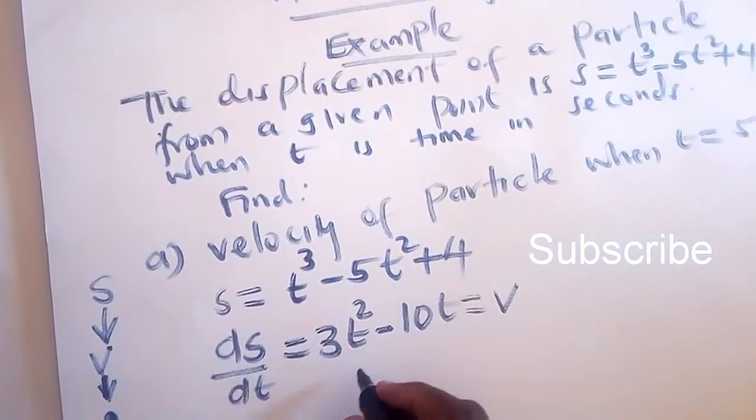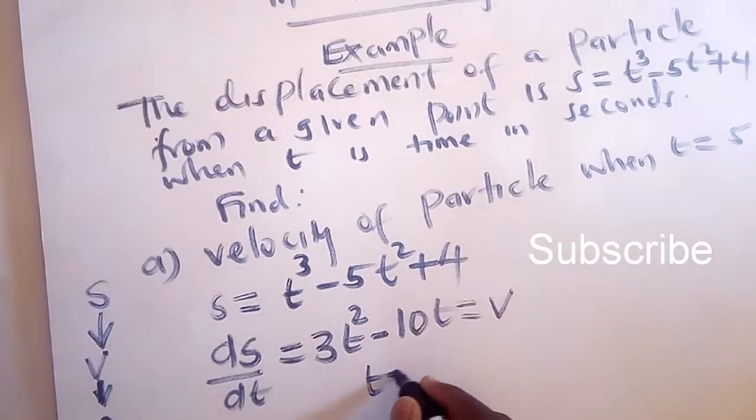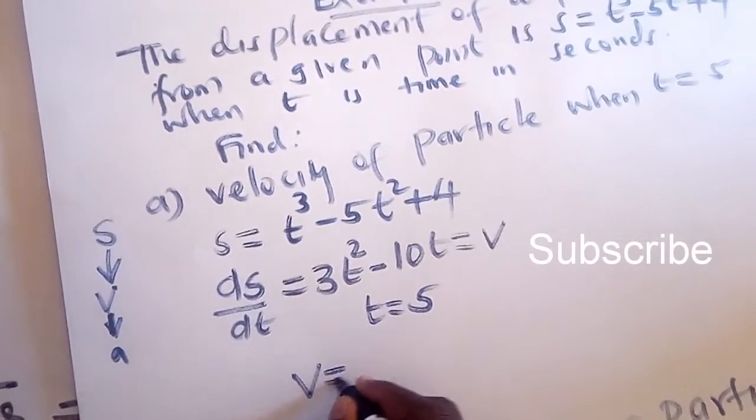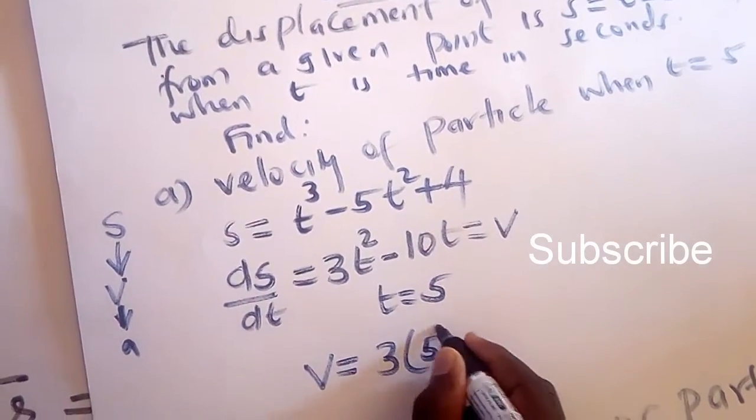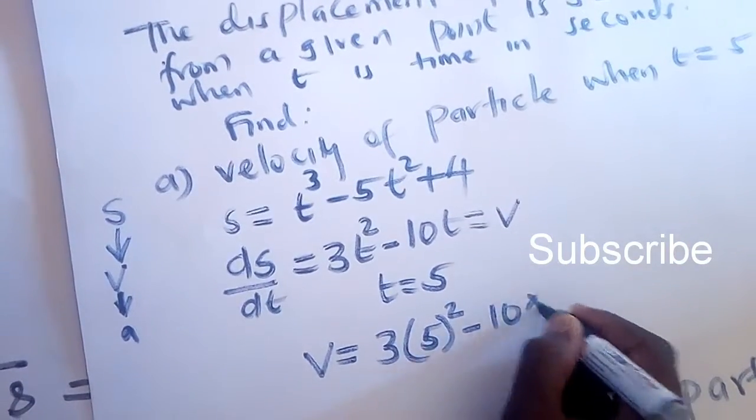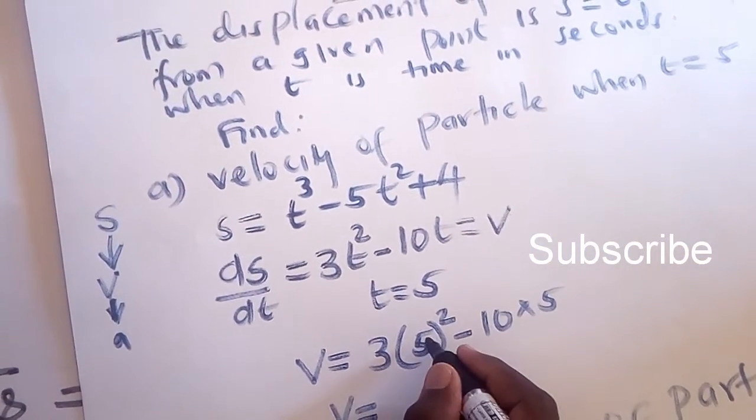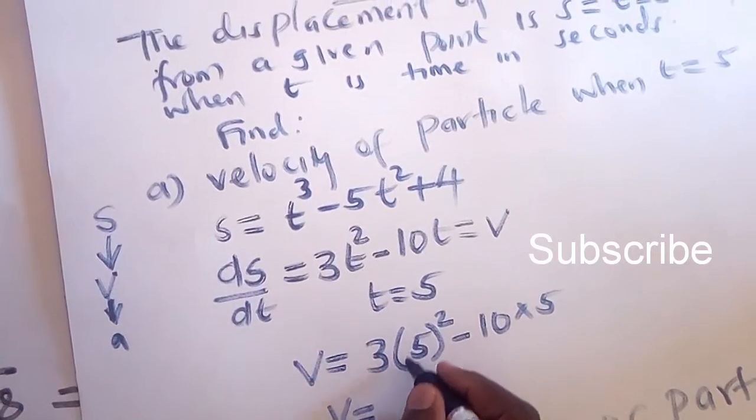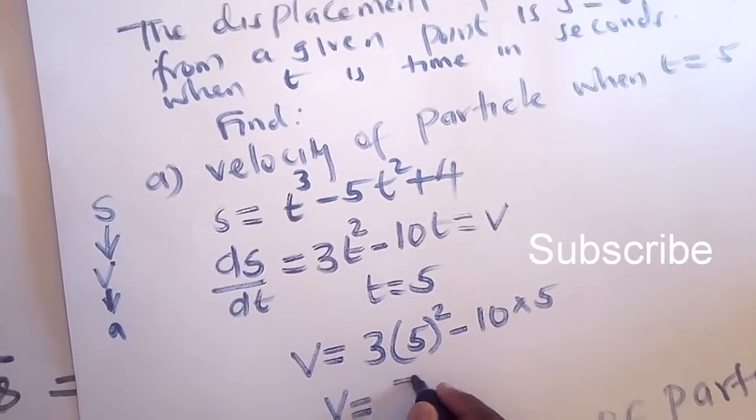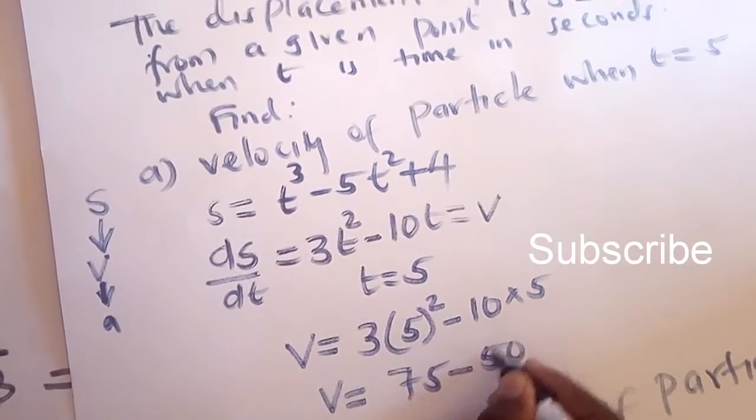For us to find velocity now, we substitute t with 5. So our velocity is going to be 3 times 5 squared minus 10 times 5. Velocity equals 25 times 3, that is 75, minus 50.